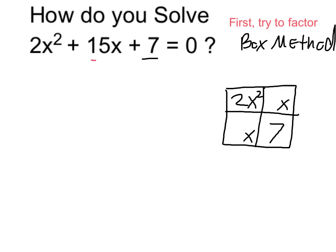My x terms have to make 15x. The way I arrive at that is I want to multiply my coefficients here, so 2 times 7 is 14, and I want factors of 14 which are going to add up to 15.